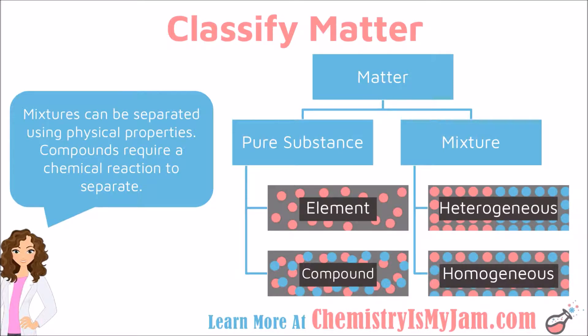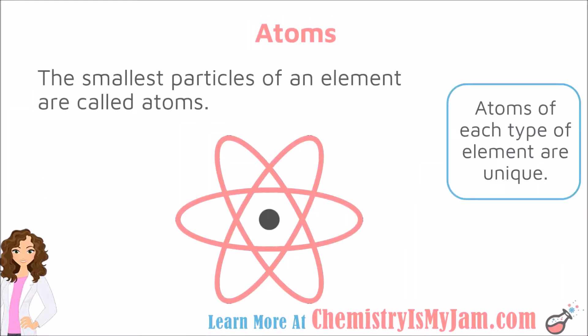Let's take a few minutes and talk about what a pure substance is. The first example is an element. Elements are made up of atoms. Atoms are considered the smallest particle of an element — just recognize that an atom is the smallest individual particle that makes up an element. The atoms of each type of element are unique; carbon atoms are different from gold atoms, which are different from hydrogen atoms.